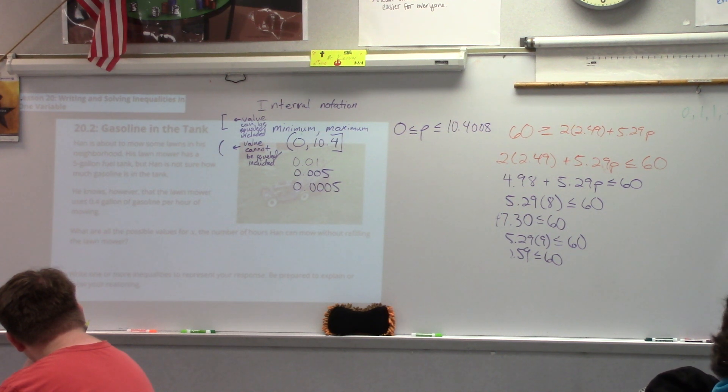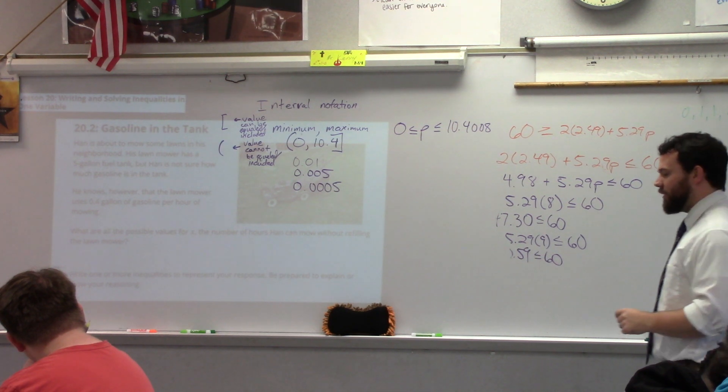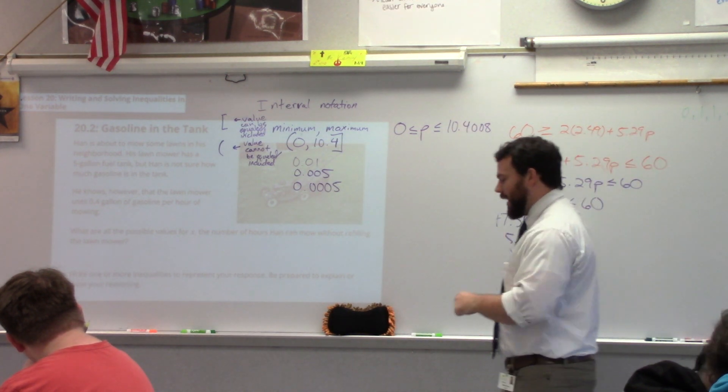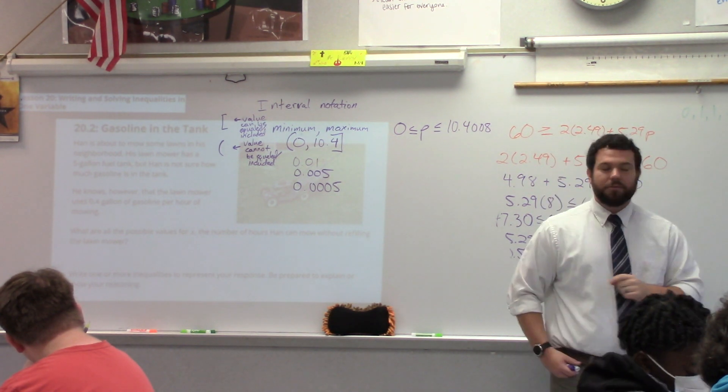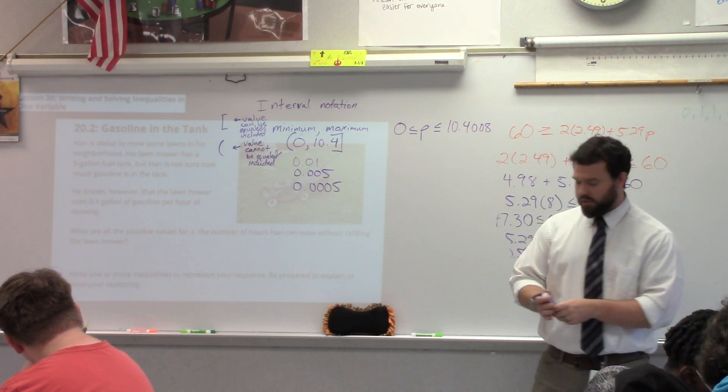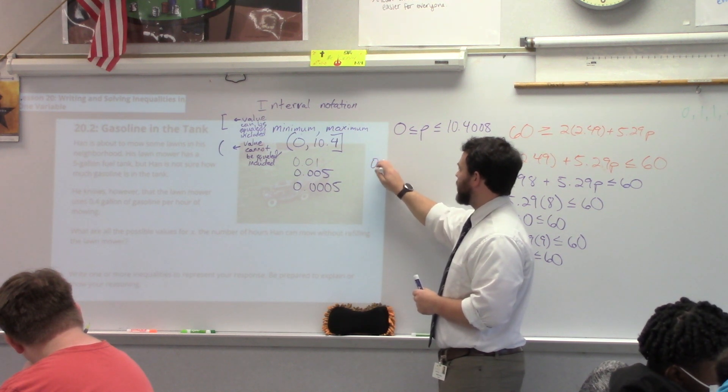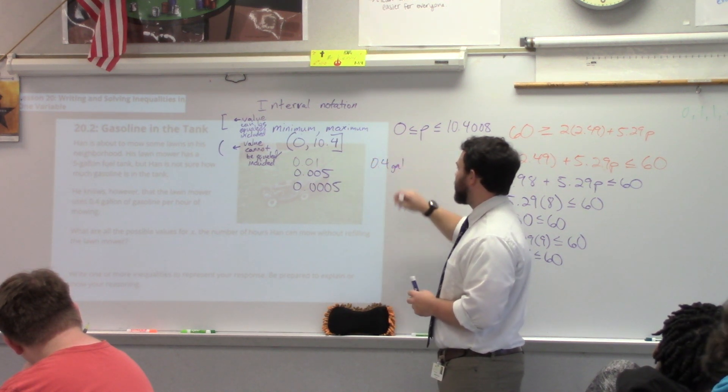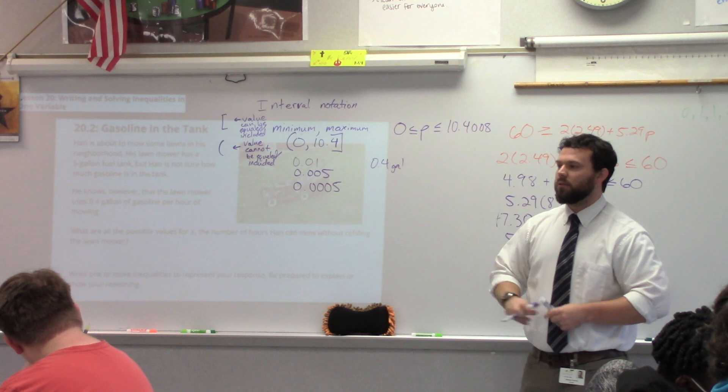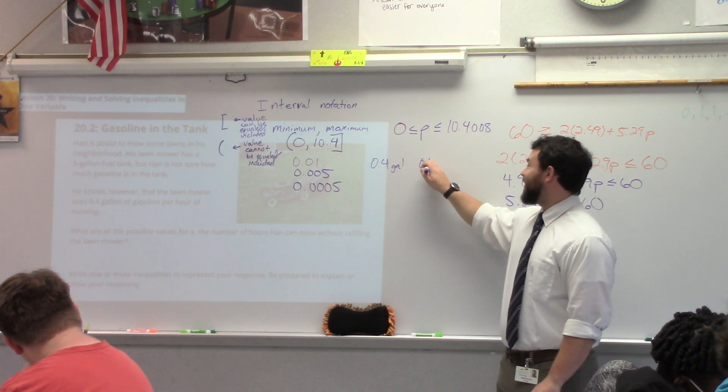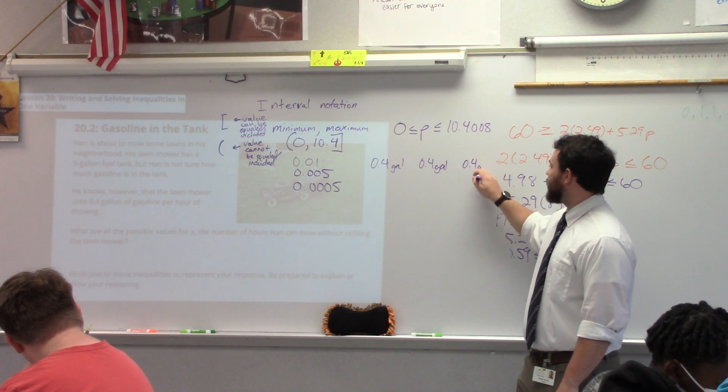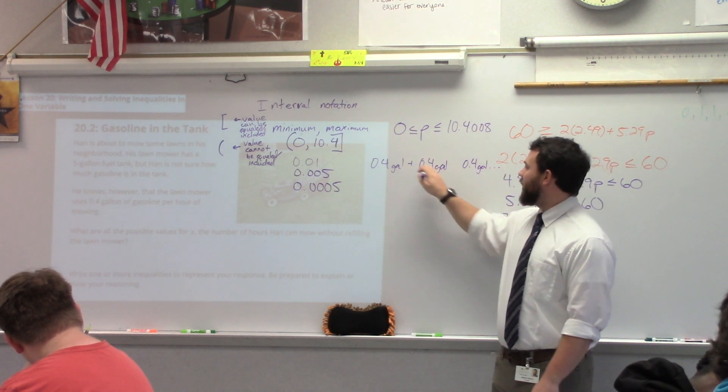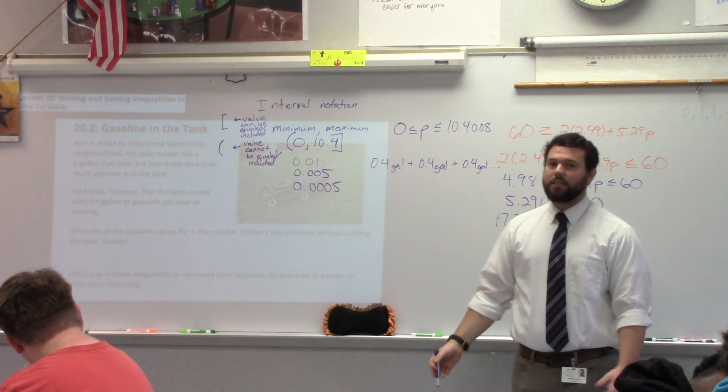First off, and I've done this every time we have a question like this, you want to start thinking like this. In one hour, how much gas has Hahn used? 0.4 gallons. How much has he used in the second hour? 0.4 gallons. And a third? And what is going to happen with all those gallons? They're going to add up, right? We want to recognize that.